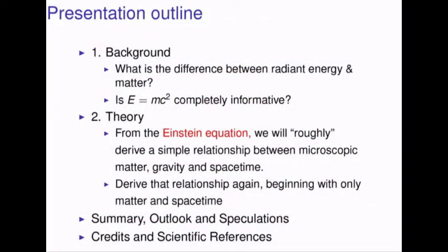We will first present the obligatory outline. Our background is: what is the difference between radiant energy and matter? Is E equals mc squared completely informative? From the Einstein equation, we will roughly derive a simple relationship between microscopic matter, gravity, and spacetime. We will derive that relationship again beginning with only matter and spacetime. We will then summarize, present an outlook, and do a little bit of speculation.